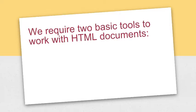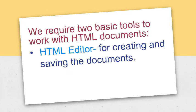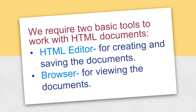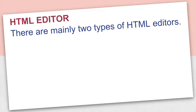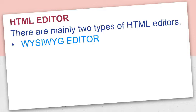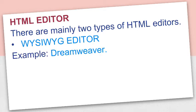We require two basic tools to work with HTML documents: an HTML editor and a web browser. We use an HTML editor for creating HTML code, and after creating the code, we save the file with an extension .htm or .html. There are mainly two types of HTML editors. The first is the WYSIWYG editor, which stands for 'What You See Is What You Get.' This type of editor allows the developer to see the result while the document is being created, providing tools and graphical interfaces. For example, Dreamweaver.